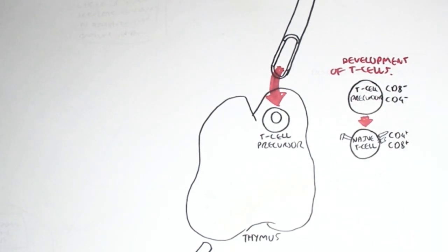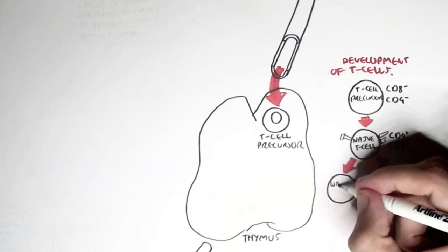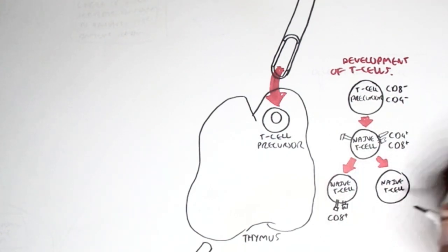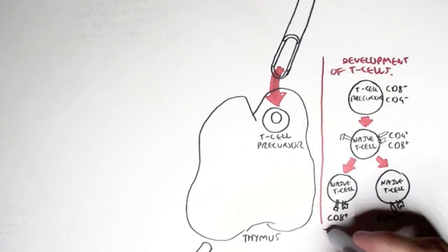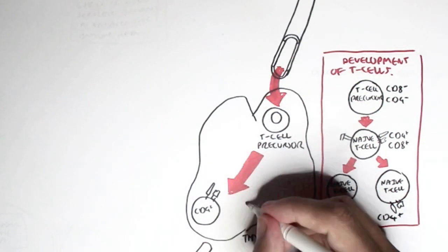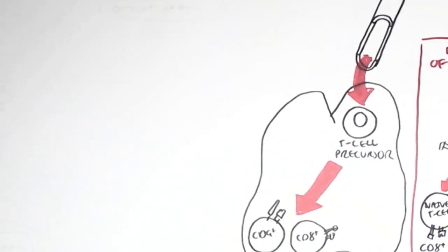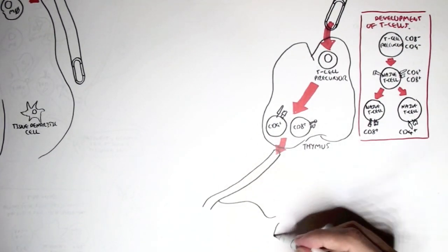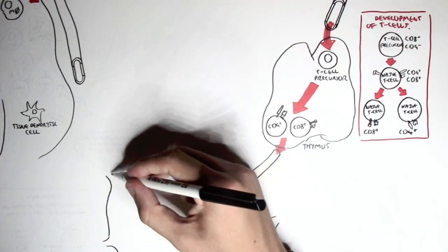But through T cell development in the thymus, it will become a naive T cell expressing both CD4 and CD8, and then it will become either a naive T cell only expressing CD8, or a naive T cell only expressing CD4 coreceptor.